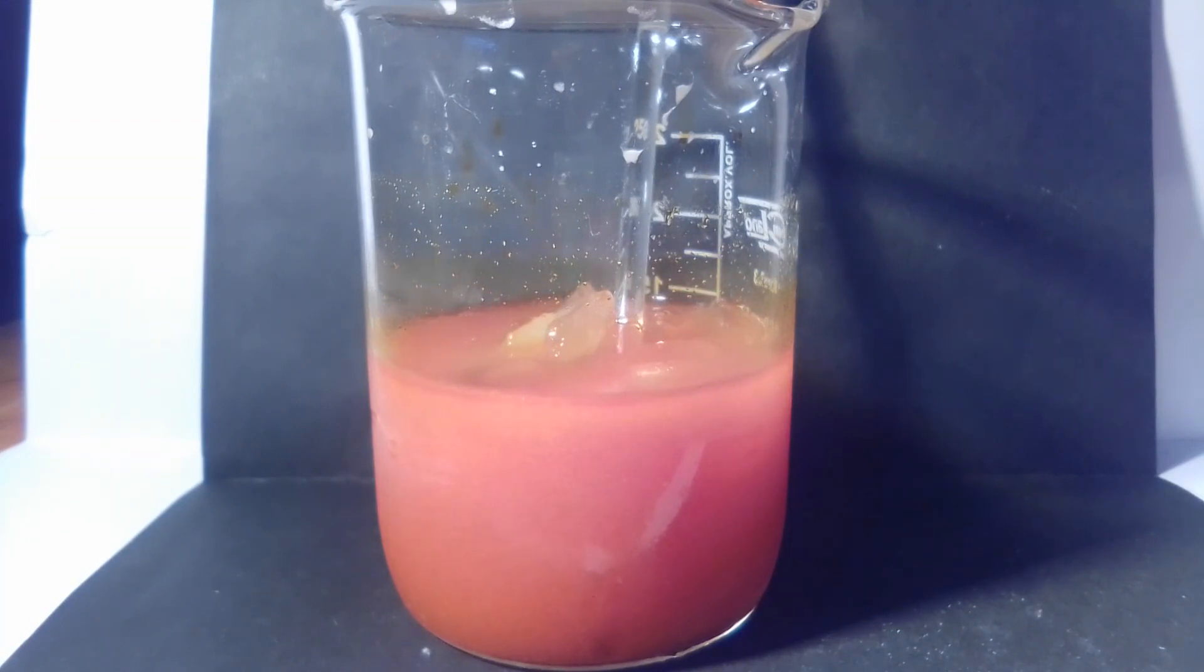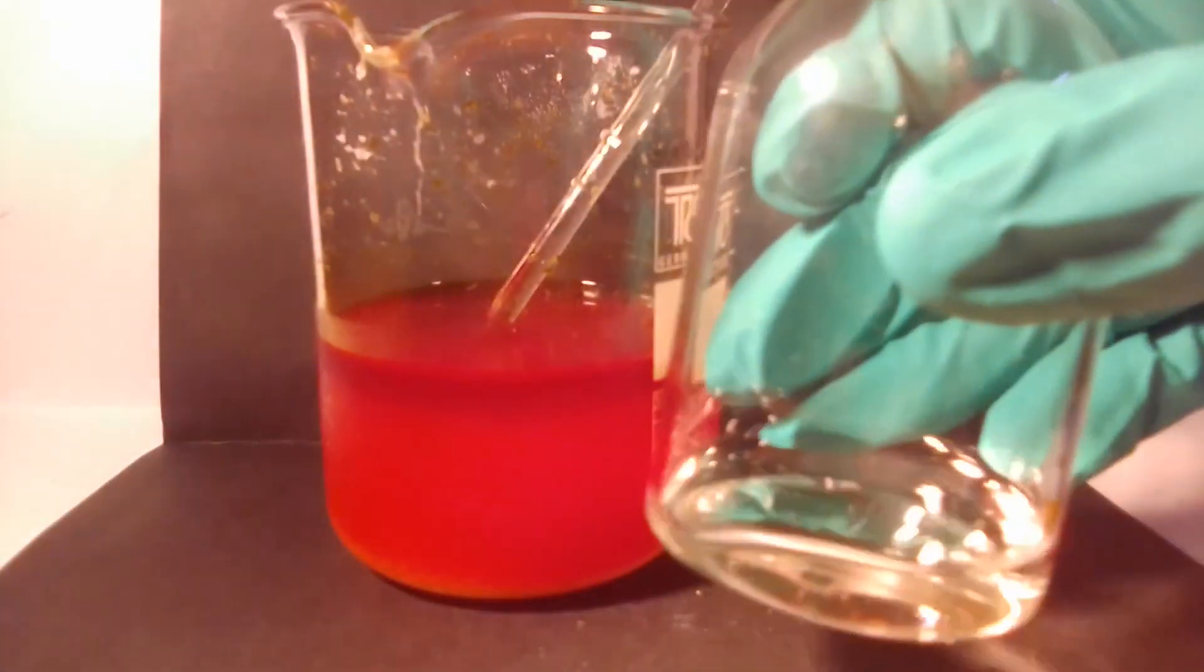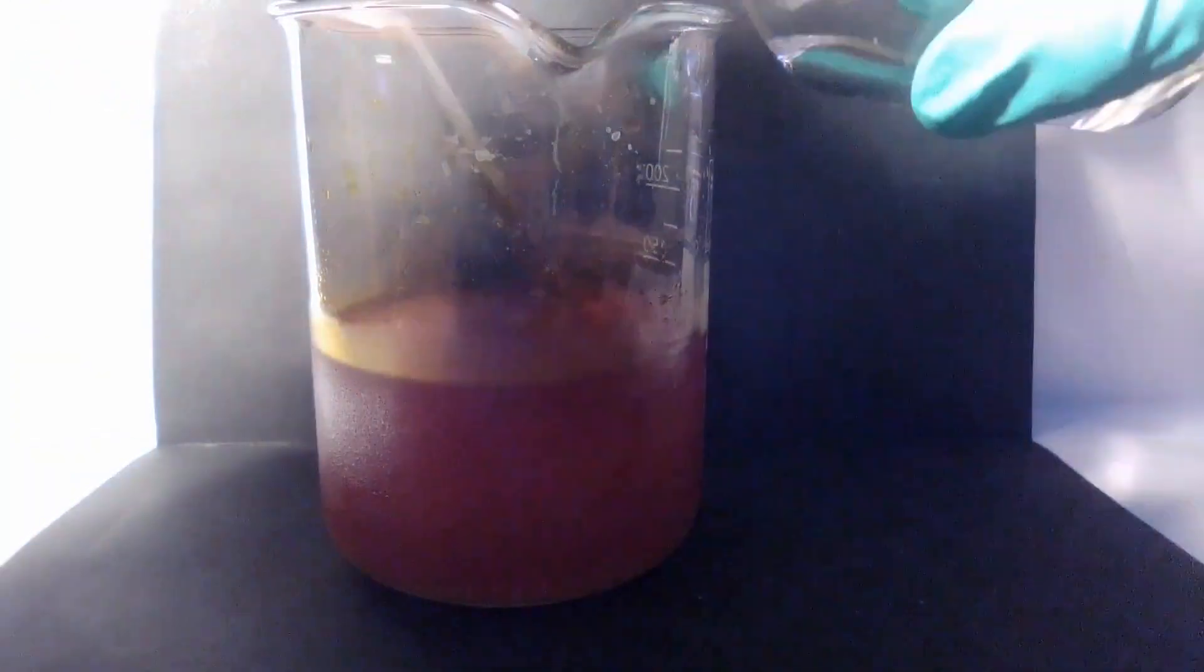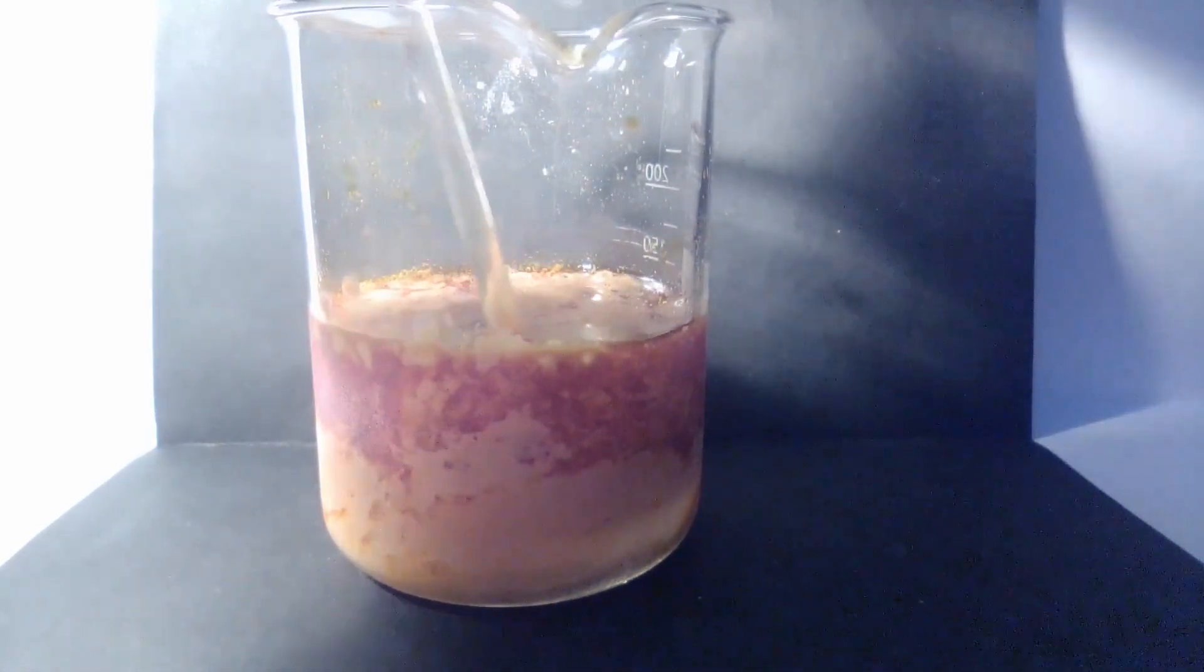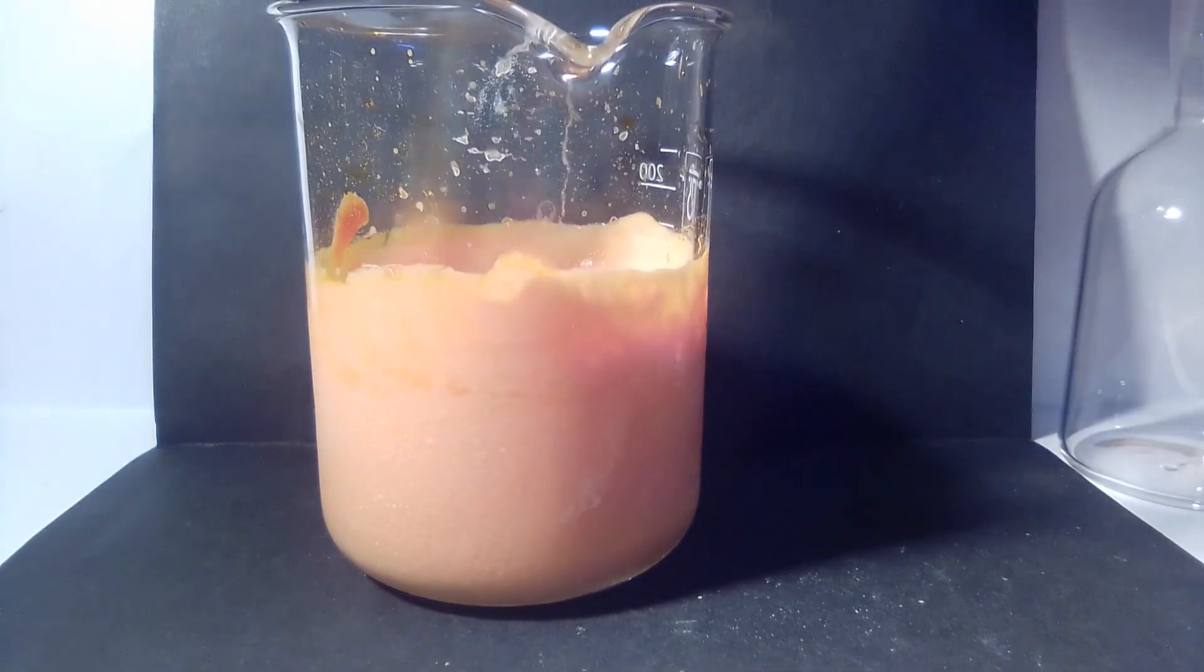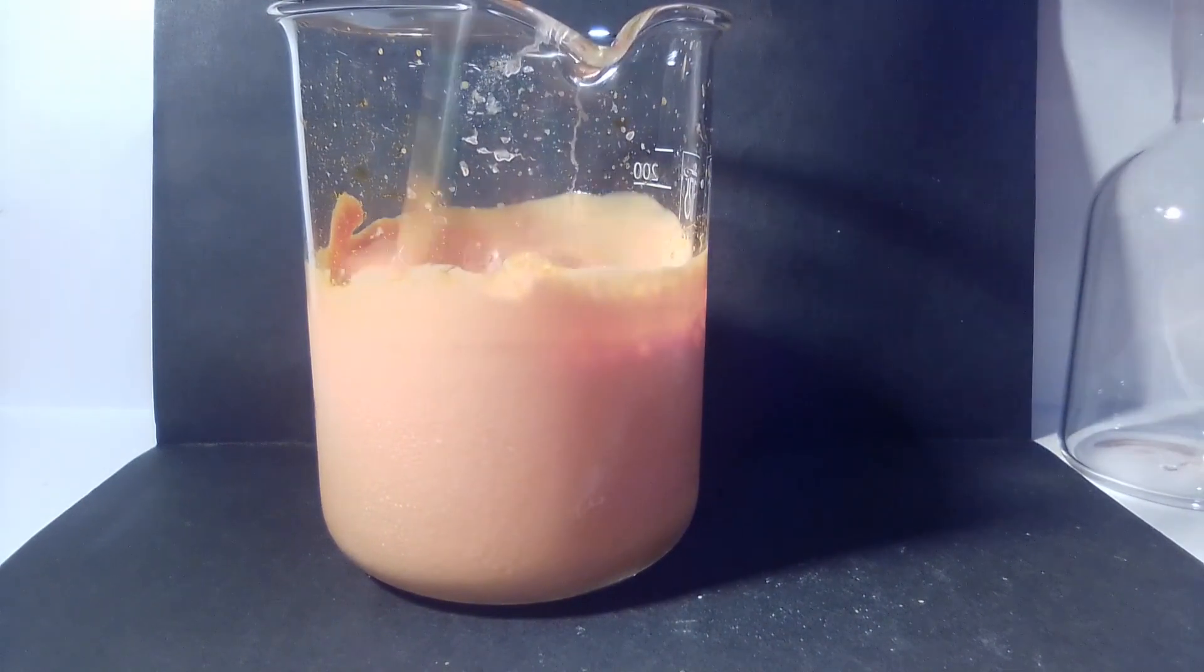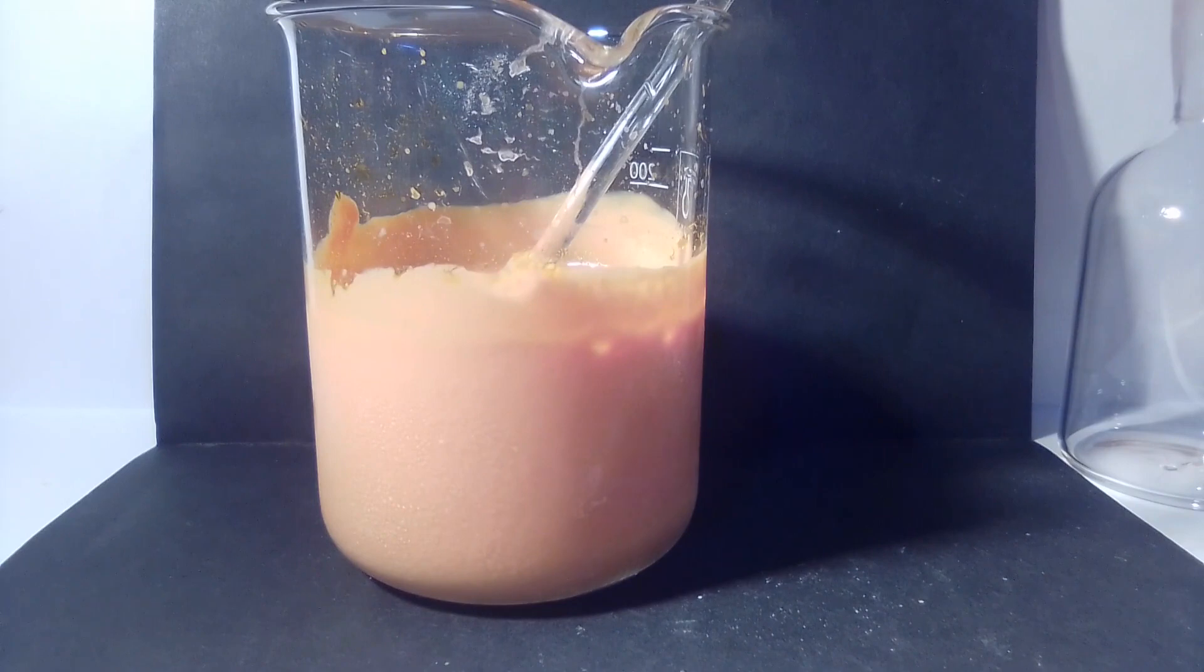And now we're ready to precipitate out the less soluble in water free acid of our dye. So I got some hydrochloric acid right here and let's add it. As you can see it gets very goopy, it basically turns into paste. But that's exactly what we want, that's our dye.